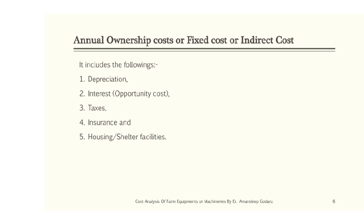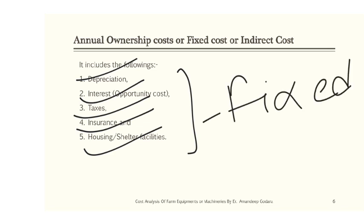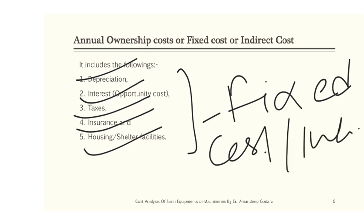Now let's discuss the annual ownership cost or fixed cost. It includes the following components: first is depreciation, second is interest or opportunity cost, and third is taxes, insurance, and housing or shelter facilities. All of these are called fixed cost or indirect costs.